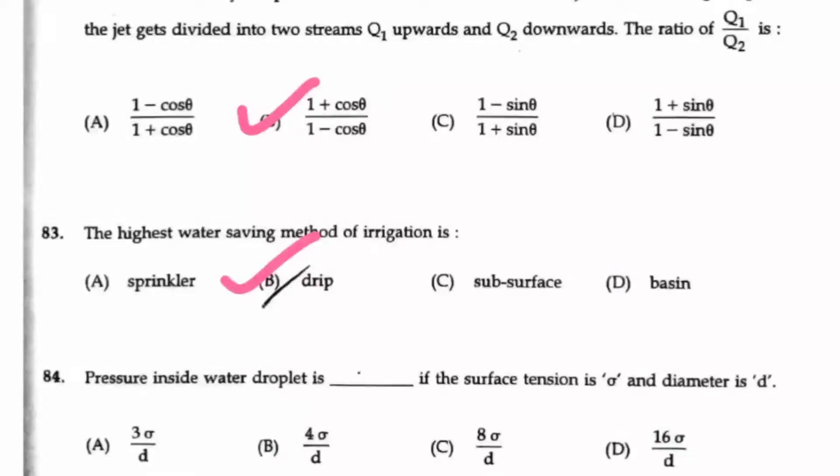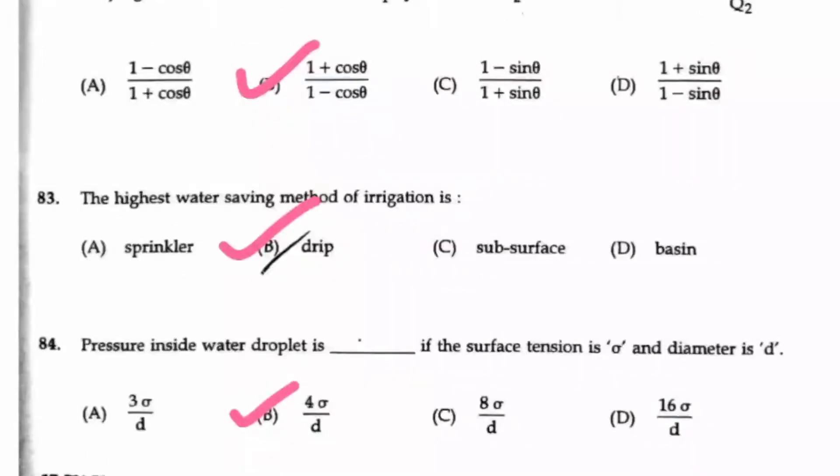Question number 84. The pressure inside the water droplet is dash, if the surface tension is sigma and the diameter is D. So the pressure inside the water droplet is actually 4 sigma by D. So option B is the right answer. So if you take a soap bubble, your pressure will be 8 sigma by D. And if you take a liquid jet, your pressure will be 2 sigma by D. So this is the difference between these three categories.